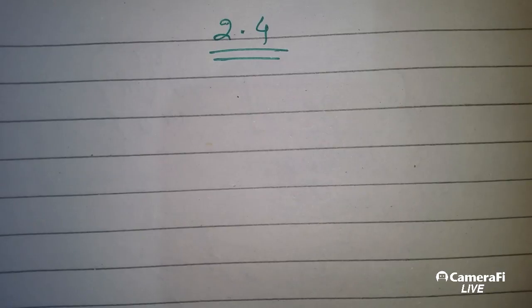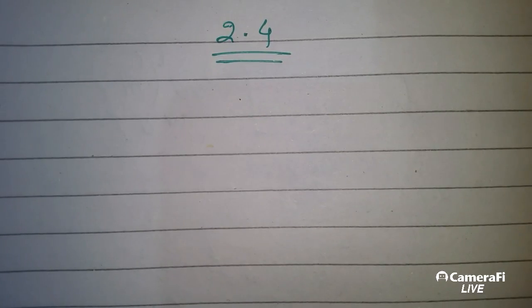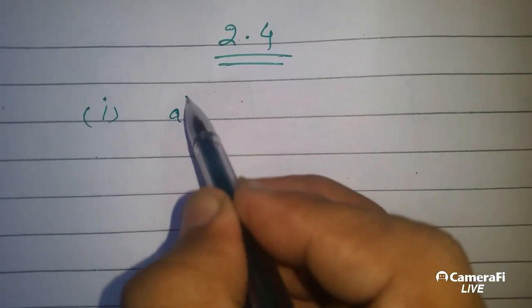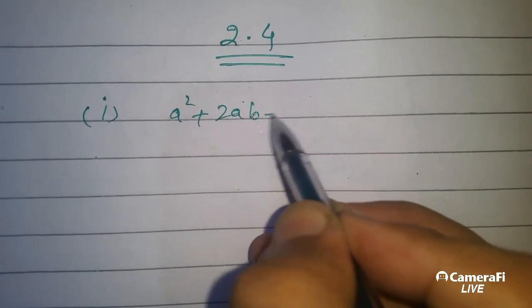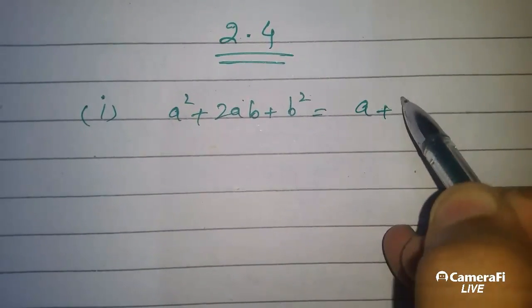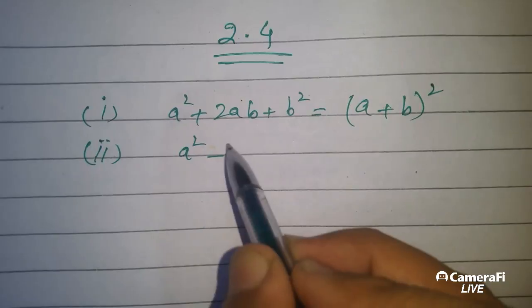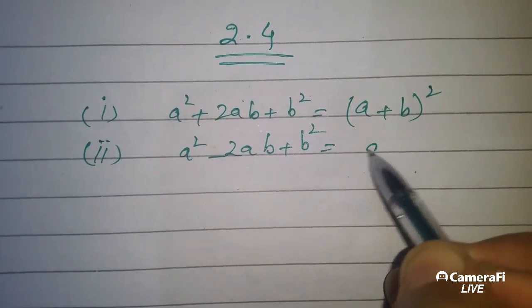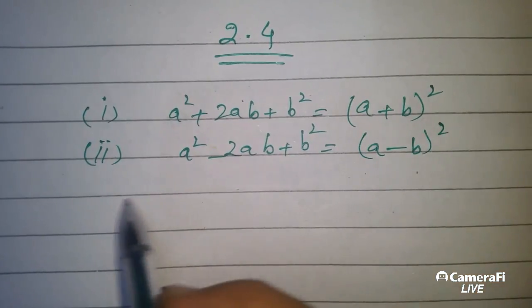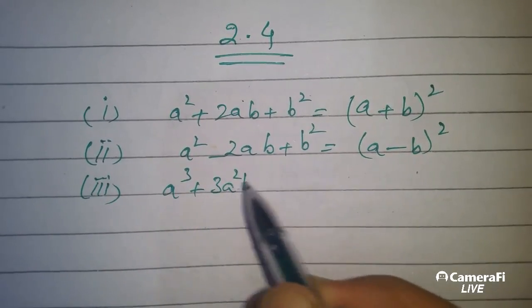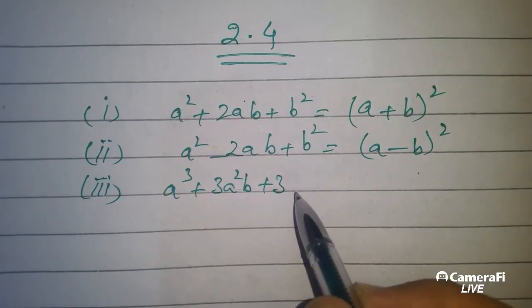In Exercise 2.4 there are some important formulas we have to discuss with you. If you keep these formulas in your mind, then it will be easy. There is a formula: we can write a plus b whole square.